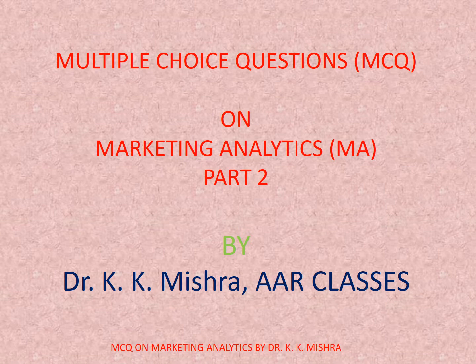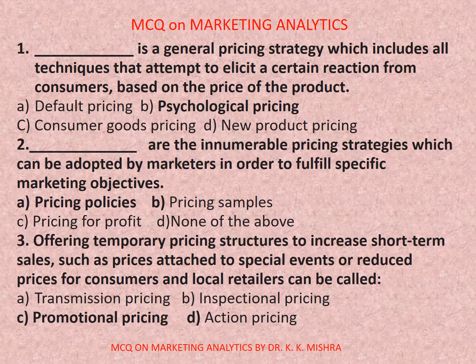Now directly come to the questions. Question number one: Dash is a general pricing strategy which includes all techniques that attempt to elicit a certain reaction from consumers based on the price of the product. Options are: a) default pricing, b) psychological pricing, c) consumer goods pricing, d) new product pricing. Correct option is b) psychological pricing.